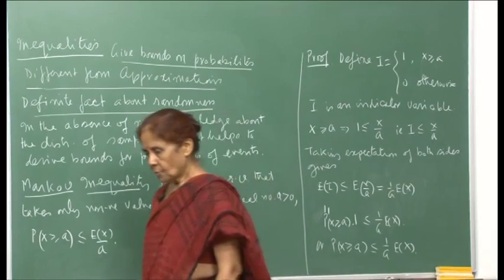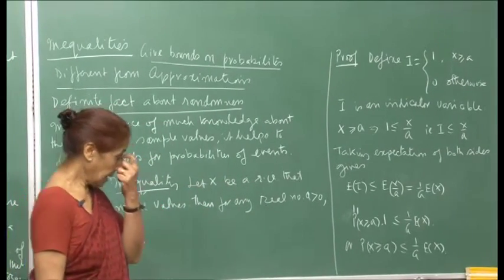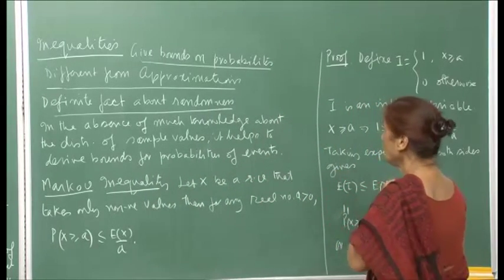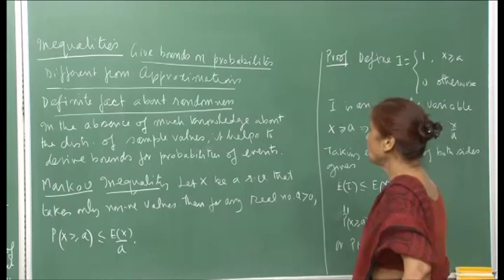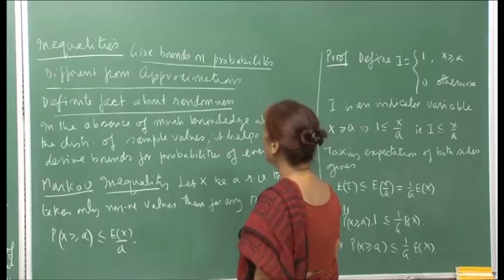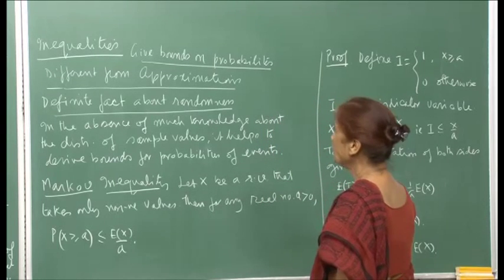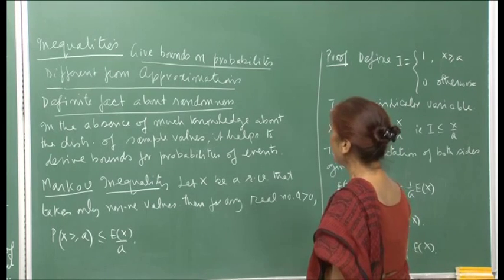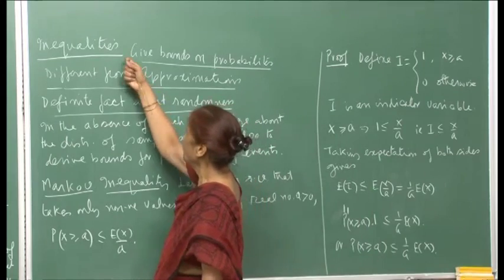The next topic we want to talk about is inequalities — statistical inequalities. One we have already seen is the Cauchy-Schwarz inequality, but there are some other important ones which we will talk about now. The role of inequalities is that you get bounds on probabilities of certain events. This is different from approximations, because the inequalities make a very definite statement.